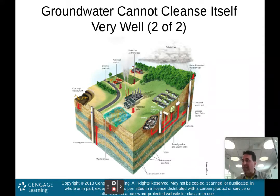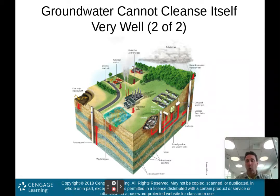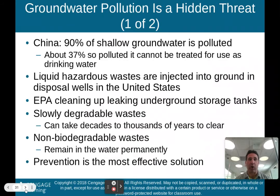Another way groundwater can get polluted is through withdrawal of too much groundwater from aquifers near coastal areas. If you withdraw too much water from freshwater aquifers near the coast, saltwater could get into the freshwater aquifer. Once saltwater is in there, that aquifer is useless — you can't use it for drinking or irrigation — and it takes a long time to get the freshwater to return.